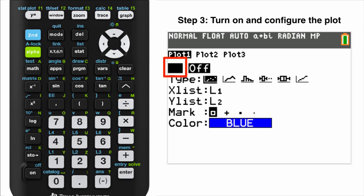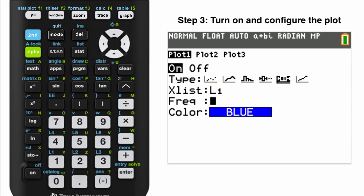Start by selecting On. Make sure the type is the 5th one over. And X list is set to list 1. Keep frequency at 1 and you can pick the color you like. I like blue.